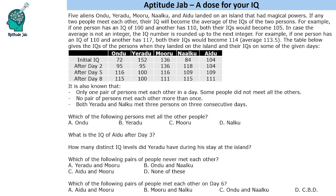Hello everyone, welcome to Aptitude Jab. This set says that there are 5 aliens: Ondu, Yerudu, Muru, Nalku, and Aidu. They landed on an island that had magical powers. If 2 people meet each other, their IQ will become the average of the IQs of the 2 persons.